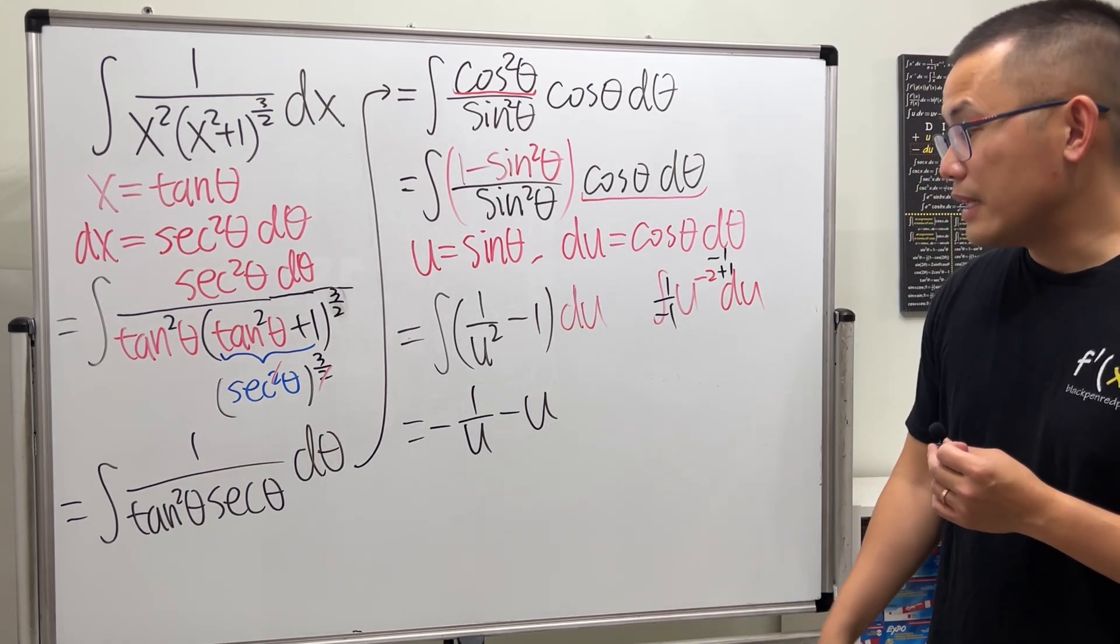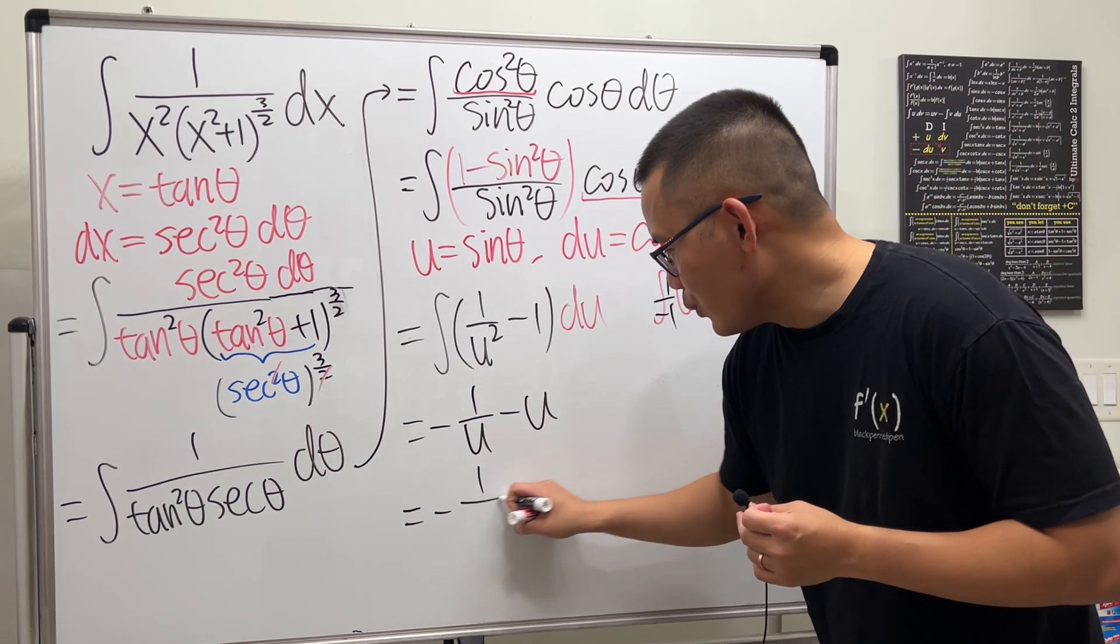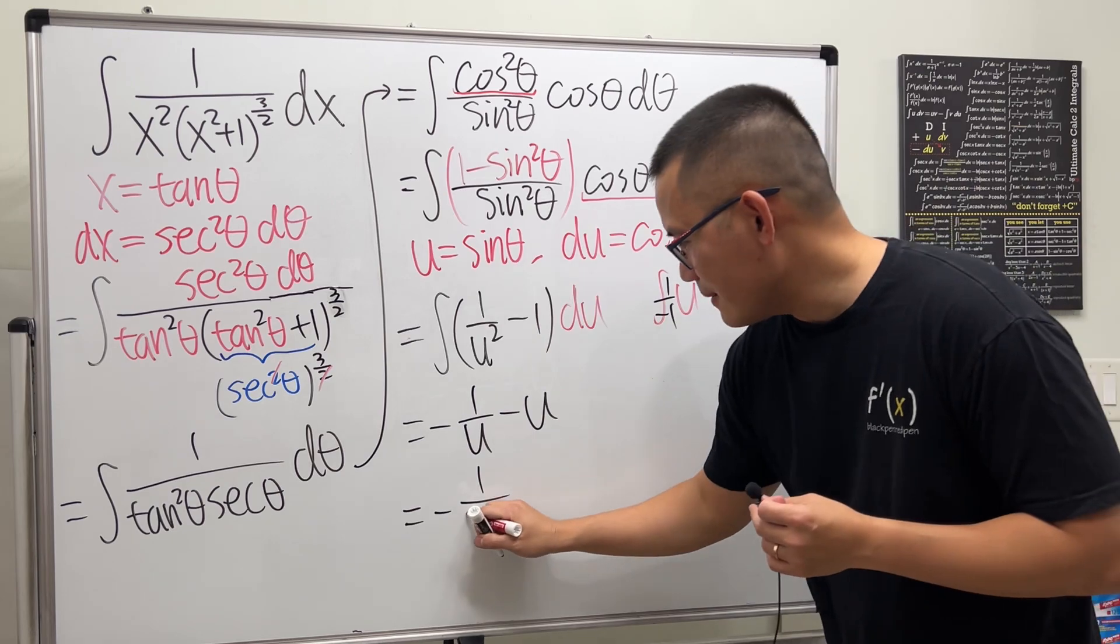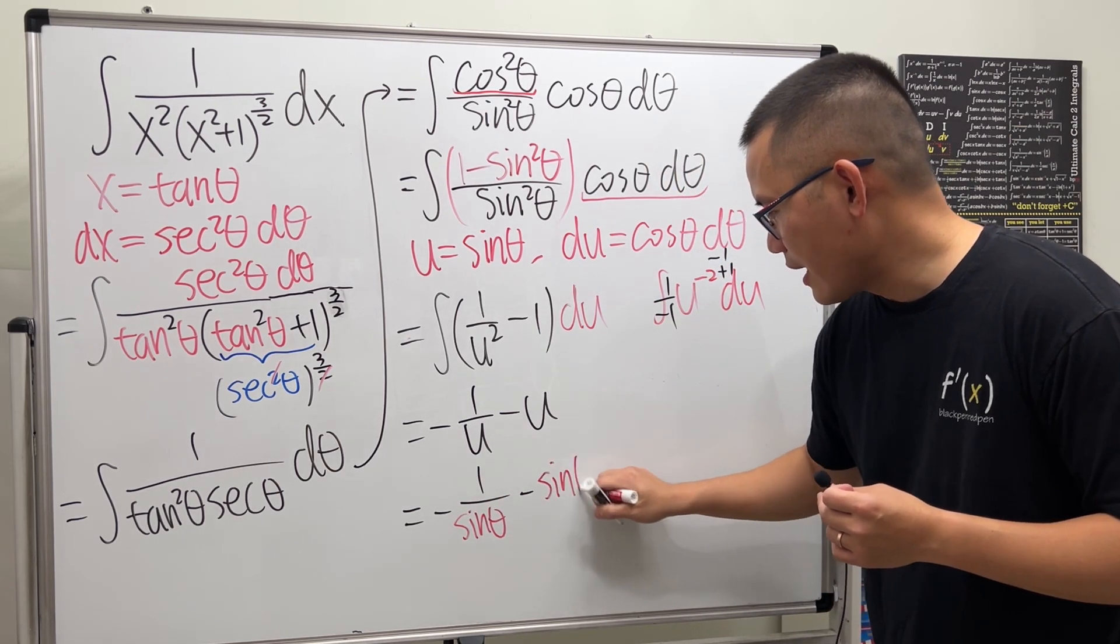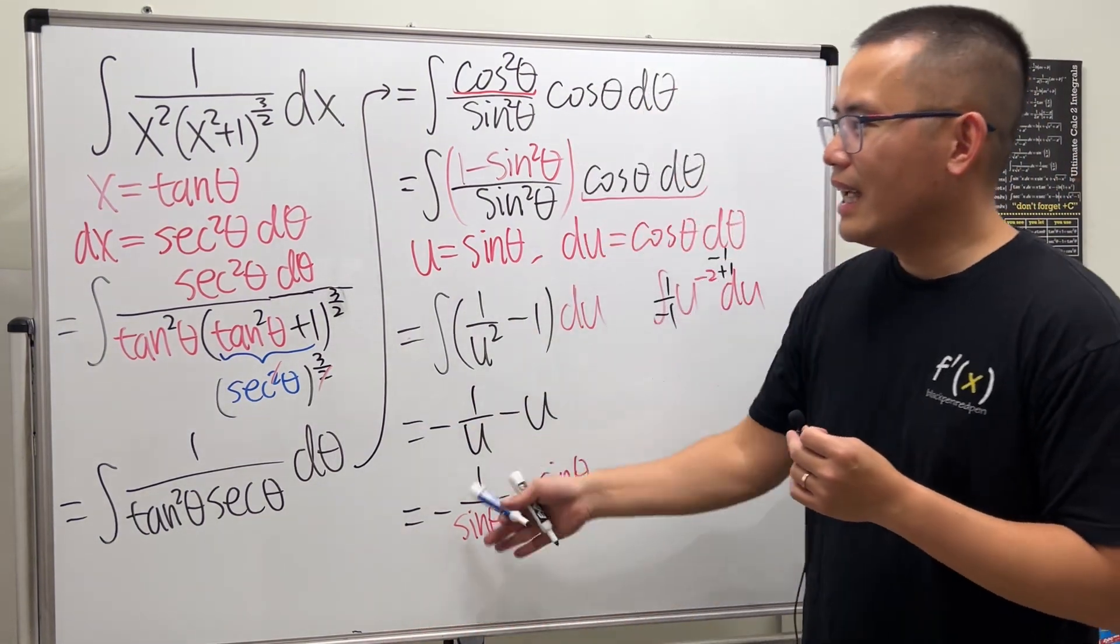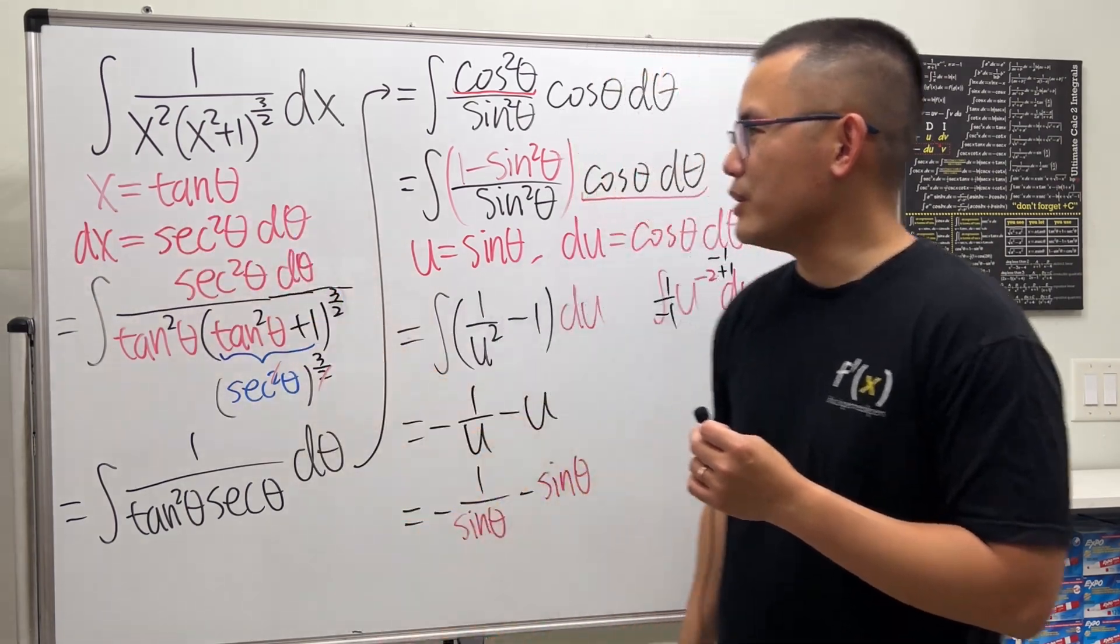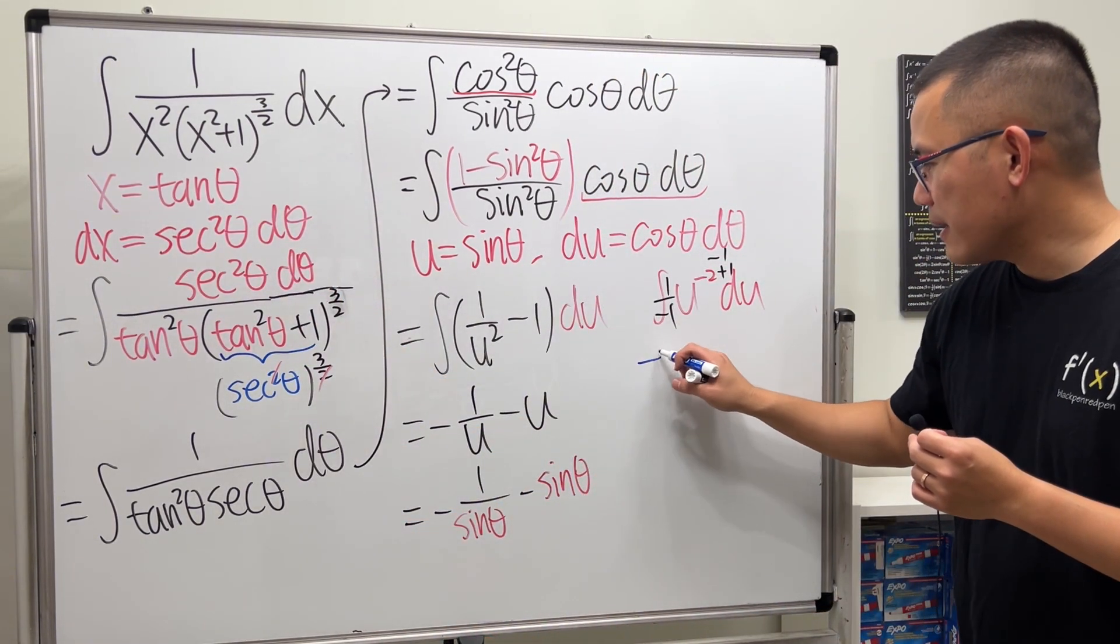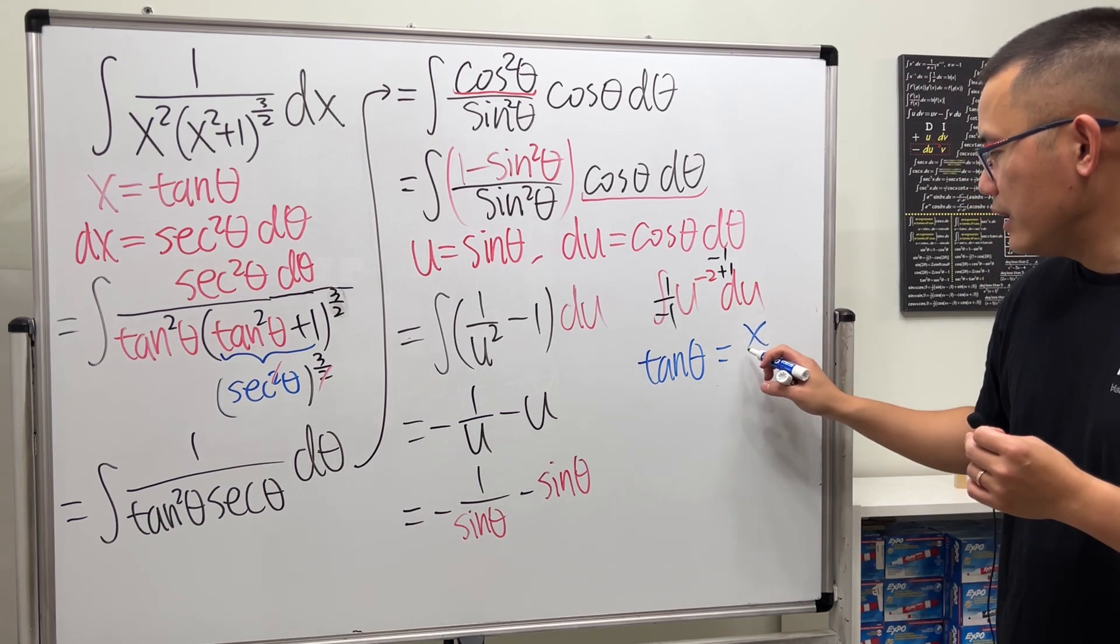We have -1/u, which is -1/sin(theta), minus sin(theta). So we got back to the theta-world, and how do we get back to the x-world?